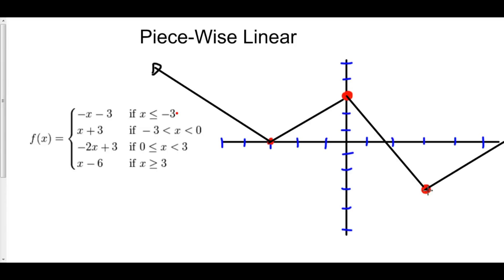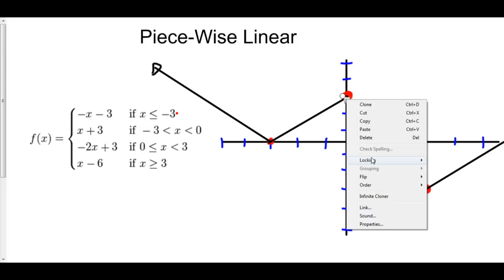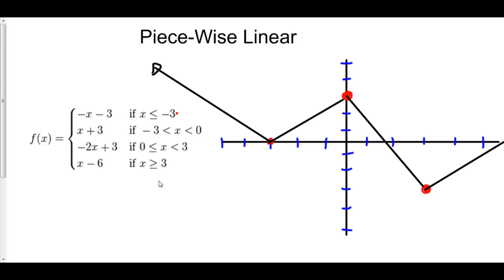And here is the Frankenstein function defined by f. To the left of negative 3, we use the line negative x minus 3. From negative 3 to 0, we use x plus 3, which has a y-intercept of 3 and slope of 1. From 0 to 3, we use negative 2x plus 3 with slope negative 2 and y-intercept 3. And to the right of 3, we use x minus 6 with a y-intercept of negative 6 and slope of 1. All points are accounted for — this function is continuous everywhere, which you'll learn about in chapter 2.